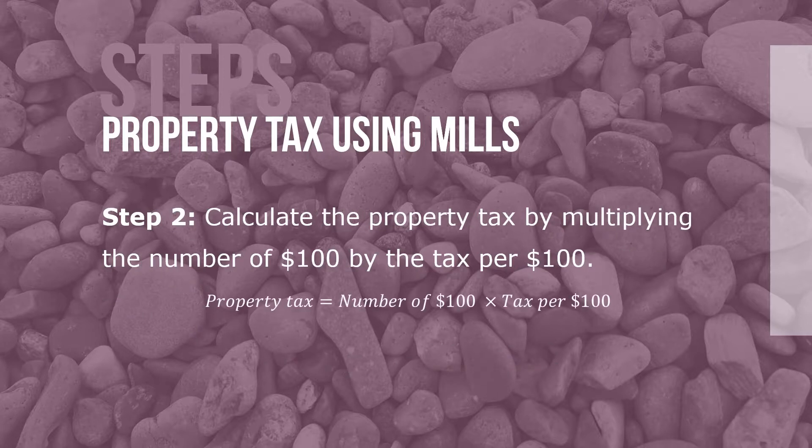Step 2: Calculate the property tax by multiplying the number of $100 by the tax per $100, where property tax equals the number of $100 times the tax per $100.